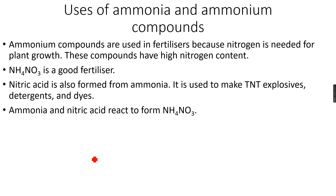Ammonium compounds are used in fertilizers because plants need nitrogen for proper growth. Ammonium compounds contain nitrogen due to the ammonium ions, which makes them good fertilizers. The best fertilizer is NH₄NO₃ because it has the highest nitrogen content among ammonium fertilizers — it contains nitrogen both from the ammonium ion and from the nitrate ion.